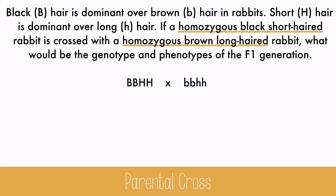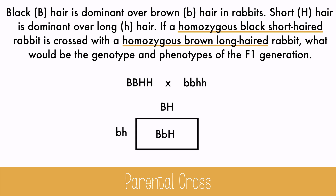This is the easiest possible cross we could make. Each group of alleles has only one possible gamete it could make: big B, big H, and little b, little h. So we make a square and cross it. For the genotypic ratio, all of the offspring will be big B, little b, big H, little h. And for the phenotypic ratio, they'll all be black and short-haired.